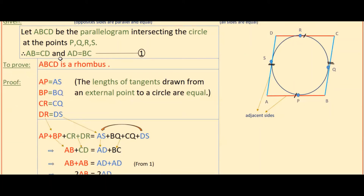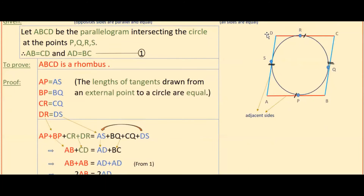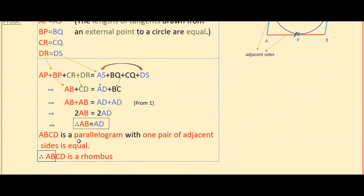So AB + CD = AD + BC. Since ABCD is a parallelogram, opposite sides are equal: AB equals CD and AD equals BC. Substituting, AB + AB = AD + AD, giving 2AB = 2AD, therefore AB equals AD. Since AB and AD are adjacent sides of the parallelogram and they are equal, ABCD is a rhombus.